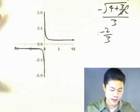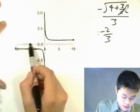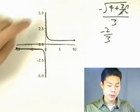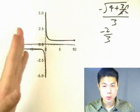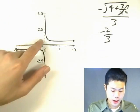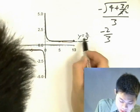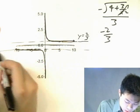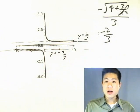Looking at the graph: the y-axis is the vertical asymptote at x = 0. We have a horizontal asymptote at y = 2/3 and another at y = −2/3. So this is a graph with three asymptotes total — one vertical and two horizontal.